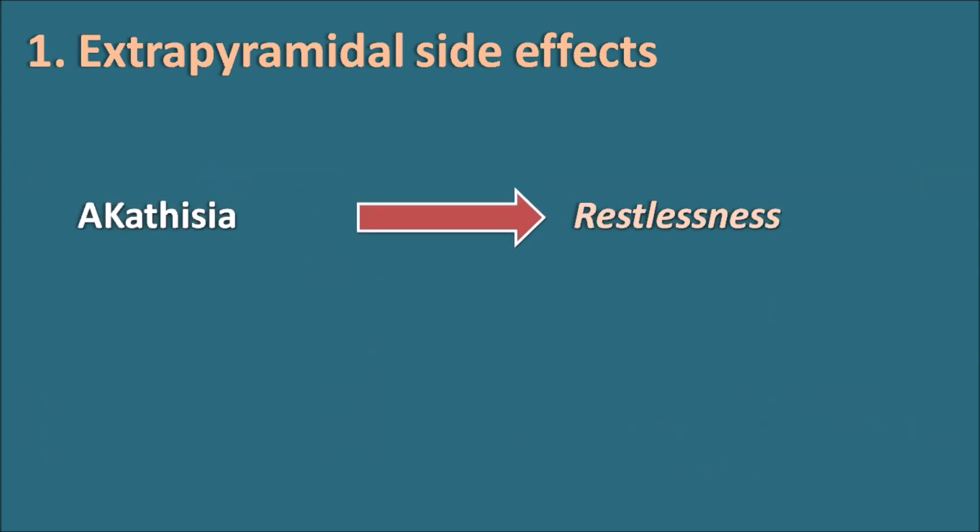The third type of extrapyramidal side effect is akathisia. Akathisia is restlessness — phenothiazines particularly produce motor restlessness because of involuntary movements.